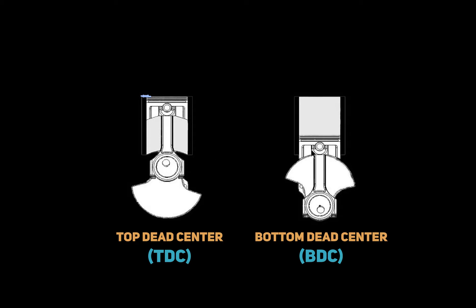Next to it, we have the bottom dead center, or what is also referred to as BDC, and this is when the piston slides down to the lowest point in the cylinder, which will be this right here. From this, we can now see a piston stroke — this is the distance the piston slides up or down from top dead center to bottom dead center. One 180-degree rotation equates to one half turn of the crankshaft. If we start right here at top dead center, the crankshaft would move all the way down, and vice versa for bottom dead center.